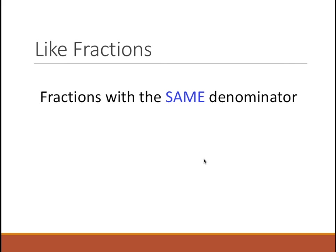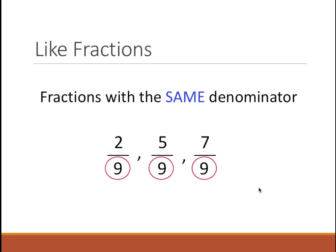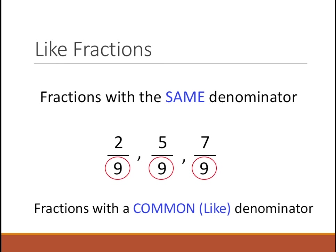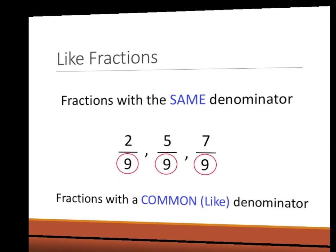Here we have fractions with the same denominator. For example, if we have 2 by 9, 5 by 9, and 7 by 9, we notice that 9 is the common denominator for all these three fractions. So these are called fractions with common or like denominator.